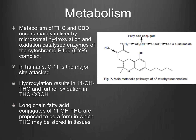The next part of pharmacokinetics is metabolism. Metabolism of THC and CBD mainly occurs in the liver by microsomal hydroxylation and oxidation, catalyzed by enzymes of the Cytochrome P450 complex. In humans, carbon-11 is a major site of attack as seen in the chemical structure. Hydroxylation results in 11-hydroxy-THC and further oxidation into THC-COOH, the acid form. Long-chain fatty acid conjugates of 11-OH-THC are thought to be a form in which THC may be stored in tissues.